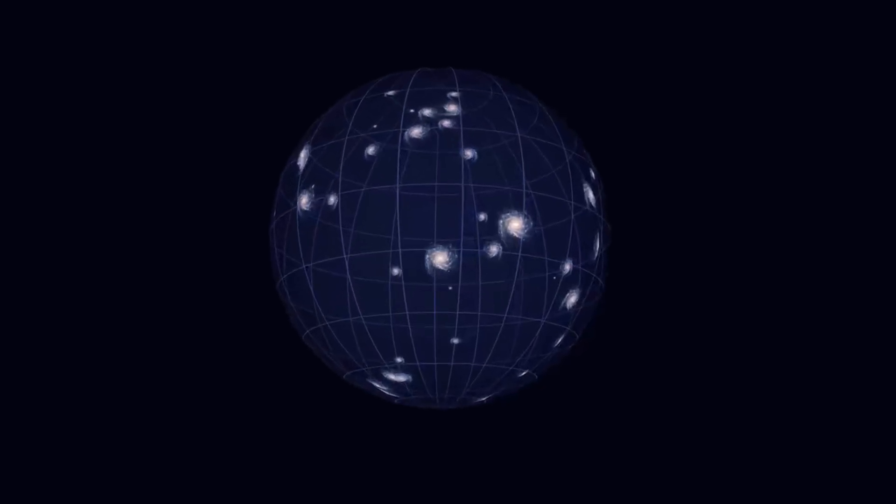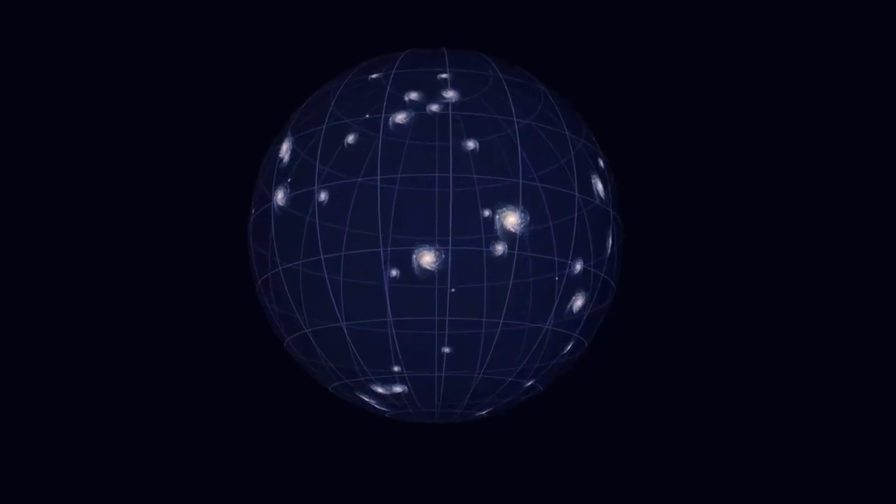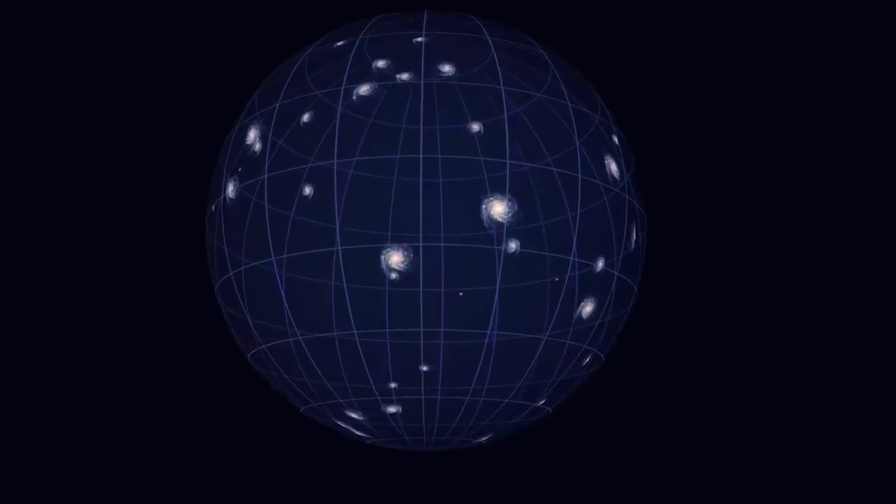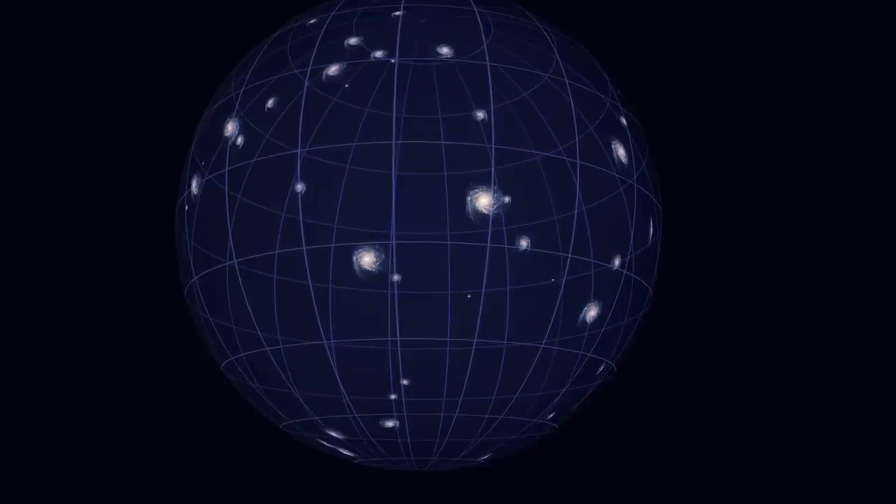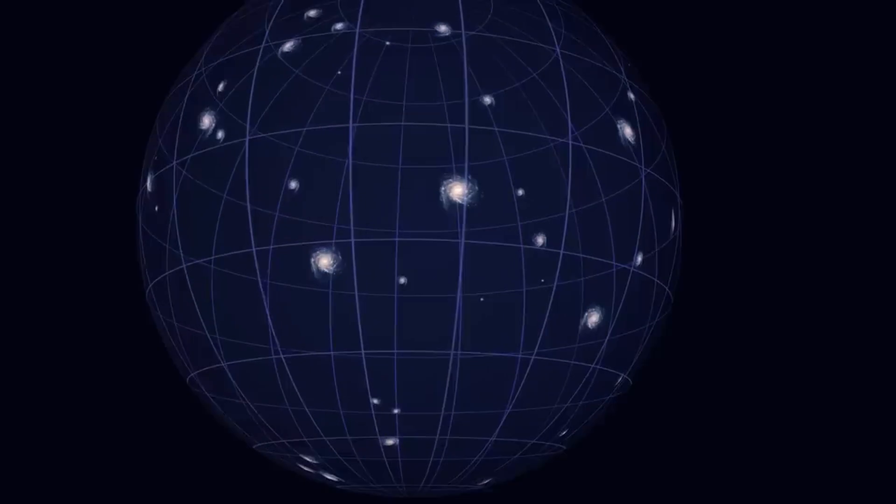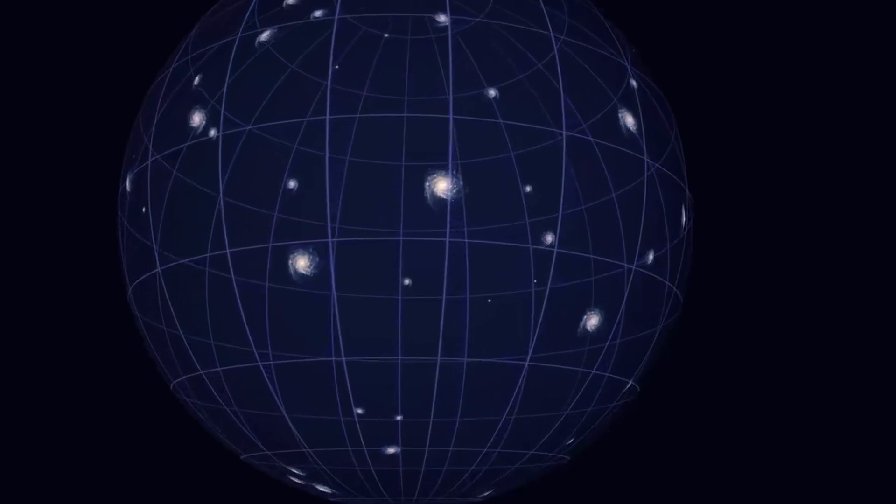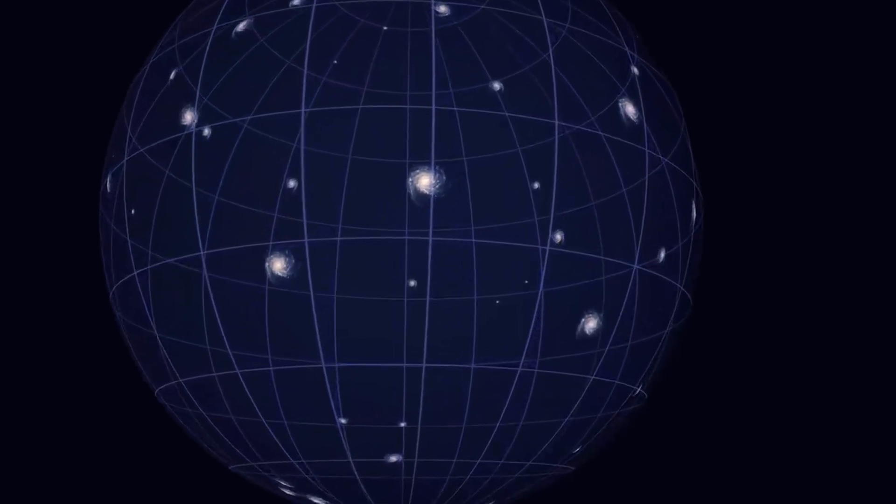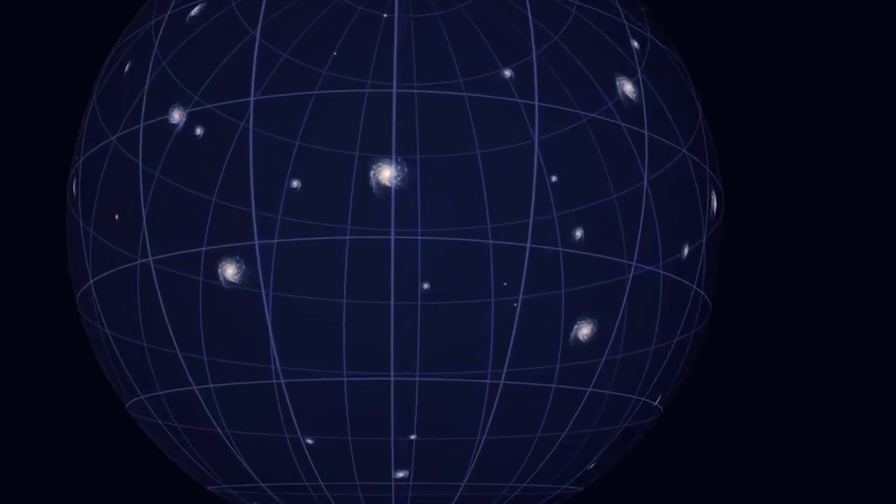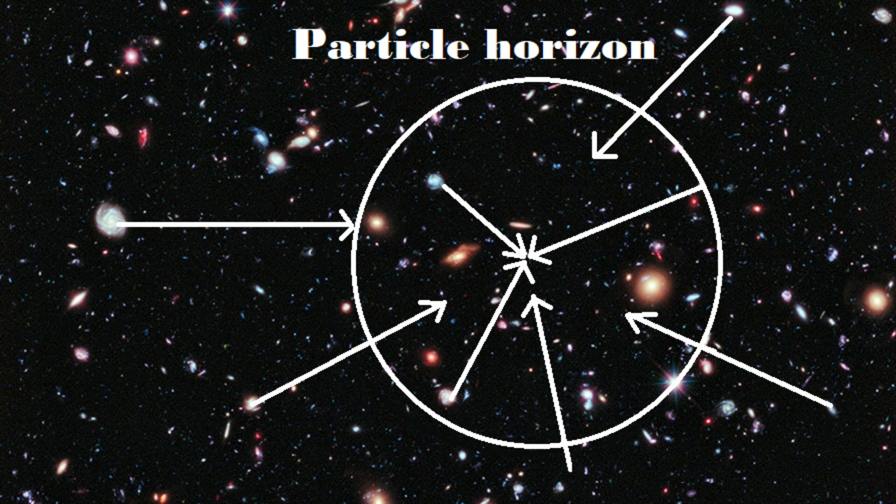An apt analogy is a beetle running on a stretching rubber band. It would take more time to reach the other end compared to running on a static band. According to modern calculations of the universe's expansion speed, considering its entire history, the most distant galaxy from us is located at a distance of 46.5 billion light years. This is more than three times the distance in a static universe.